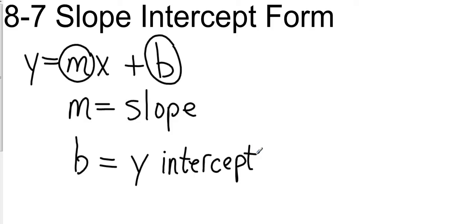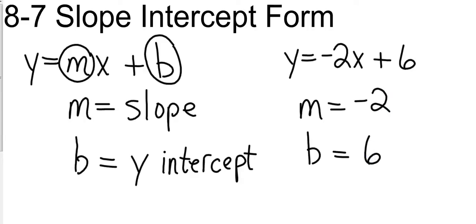So, if I gave you over here to the right the equation y equals negative 2x plus 6 and I asked you to tell me what the slope was and what the y-intercept was, this would be very simple. The slope is just the number in front of the x, so my slope is going to be negative 2 and my y-intercept is going to be 6. You will get some problems that are that simple. They just give you the formula, you have to take the numbers out.